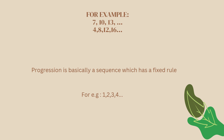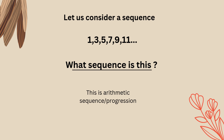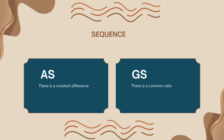Sometimes you will see the term arithmetic sequence or arithmetic progression, which is basically the same thing. In this video, we are going to study two kinds of sequences: arithmetic sequence and geometric sequence. Arithmetic sequence has a common difference, whereas geometric sequence has a common ratio.